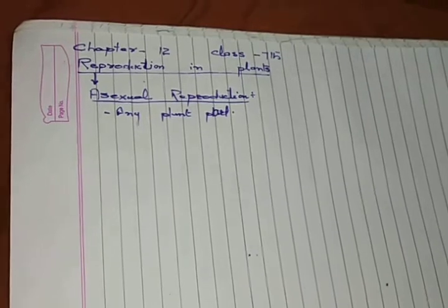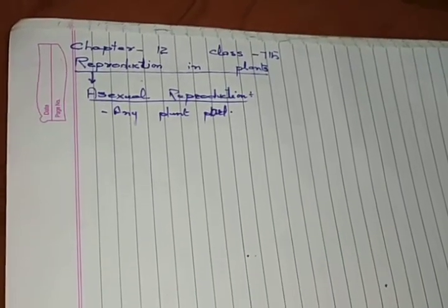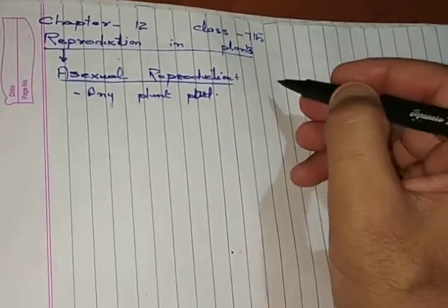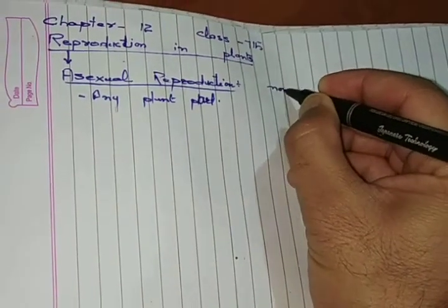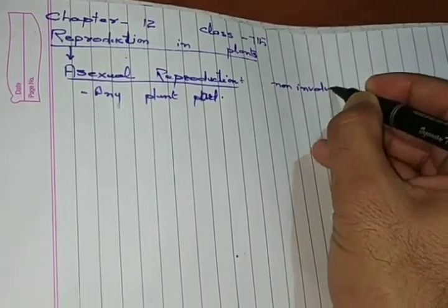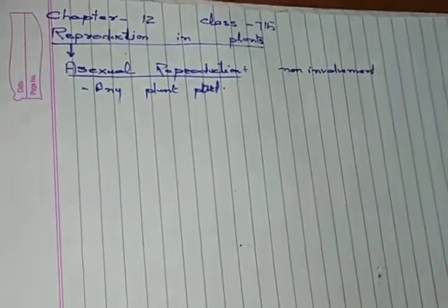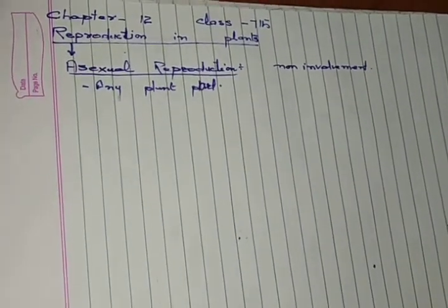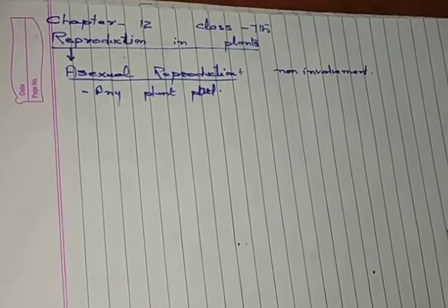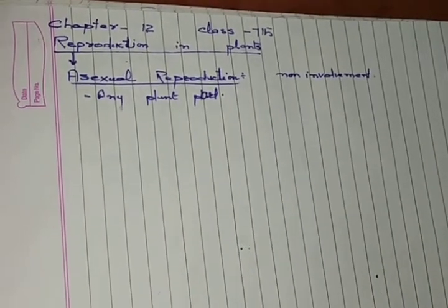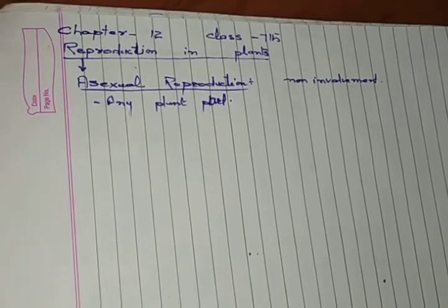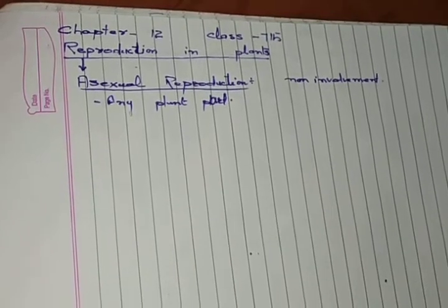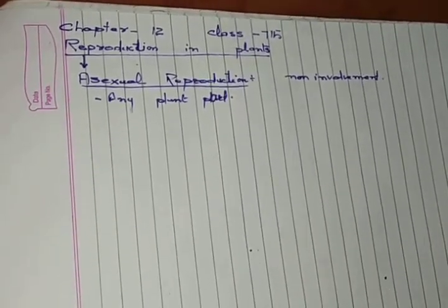We are discussing the first type, which is asexual reproduction. This is a non-involvement of sexes. In this reproduction, any plant part undergoes some kind of modification or change. This change activity in a plant or organism results in a new organism, which is what we call asexual reproduction.